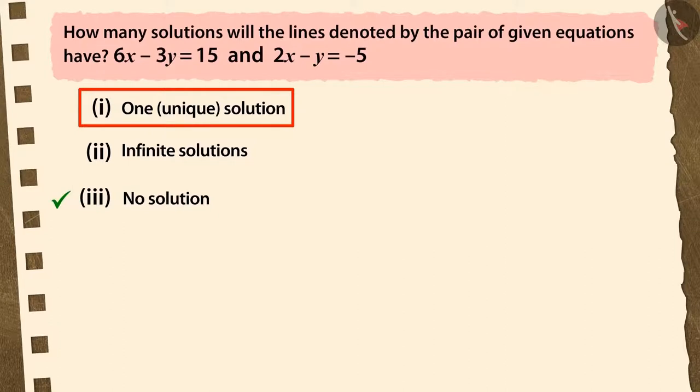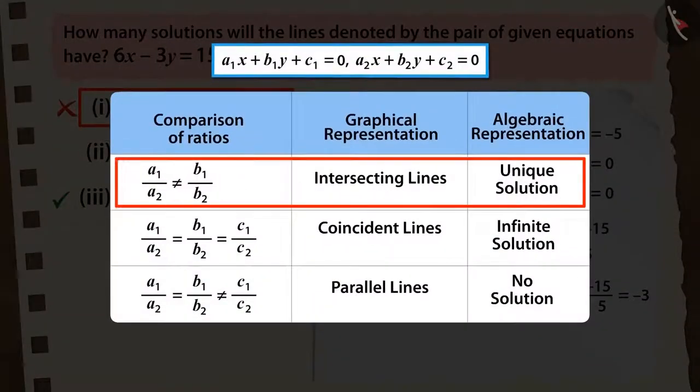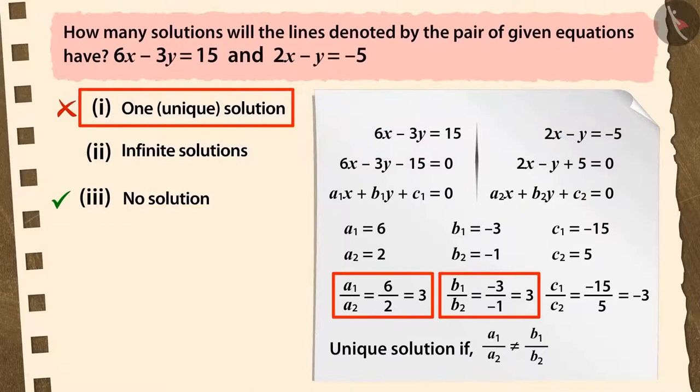If you had chosen option 1, then it's a good try, but this is an incorrect answer. Because in order to have one or a unique solution to a pair of linear equations, the ratio of their coefficients should not be equal, which is not true in this case. Hence, option 1 is incorrect.